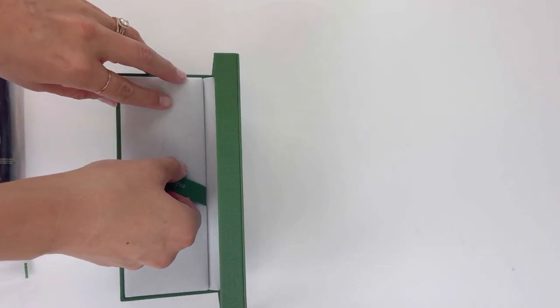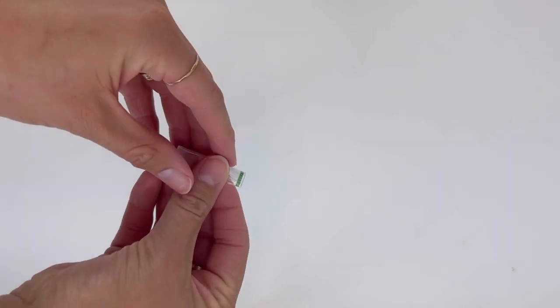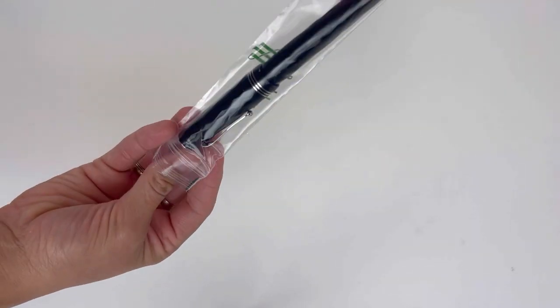let's run through the under the false bottom. You'll find your information about the pen, the company, your warranty information, and some instructional information. This is the standard international size cartridge converter and it comes with a converter and two cartridges.